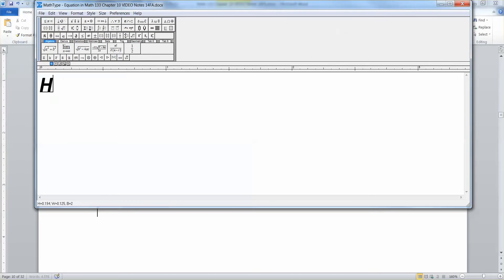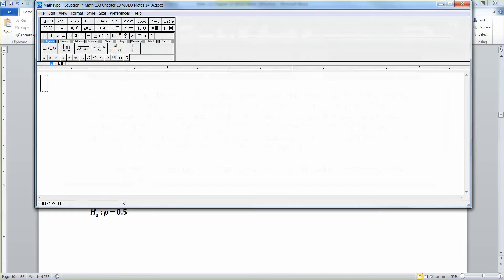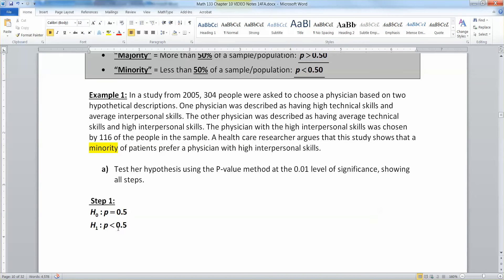Once you know minority, then you know what your null and alternative are. Because you know that H0 would be p is equal to 0.5. And you know that H1, the alternative, is p is less than 0.5. And that part comes from the minority part.